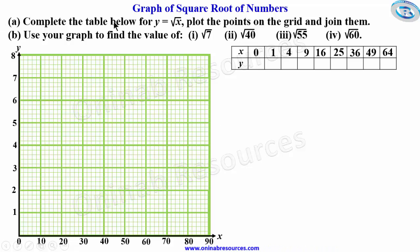Problem A: Complete the table below for y = √x, plot the points on the grid and join them. B: Use your graph to find the value of (i) √7, (ii) √40, (iii) √55, and (iv) √60.